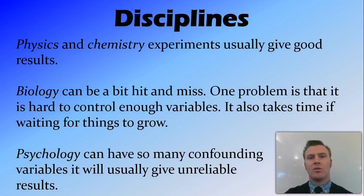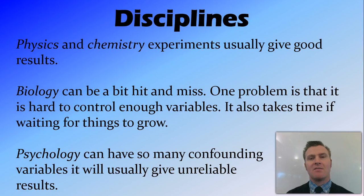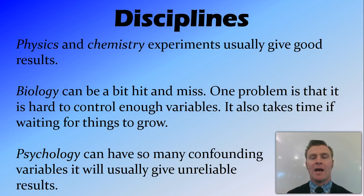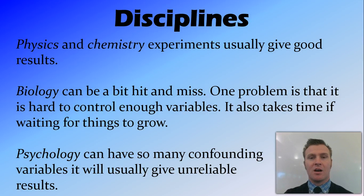Also, if you're looking at plant growth for example, it takes time for those plants to grow, so the time it takes you to do your experiment is extended. Psychology as a scientific discipline can have many confounding variables — so many that it's impossible to control or even know about them all, usually giving you unreliable results. In psychological studies they test very large groups of people so these variables even out, but you won't have the facilities or the time to do this.